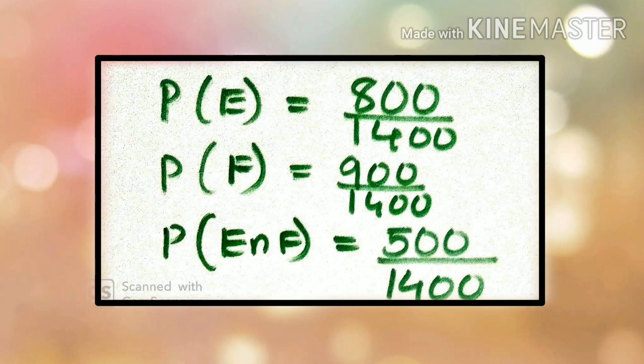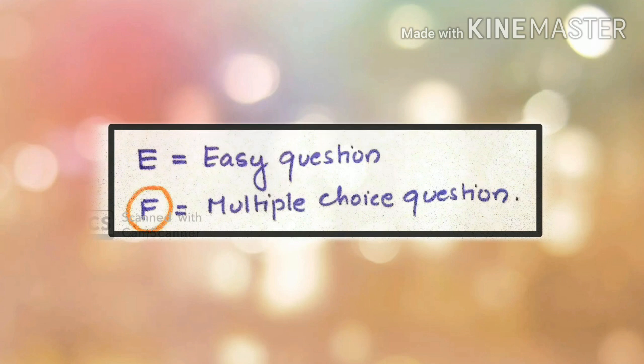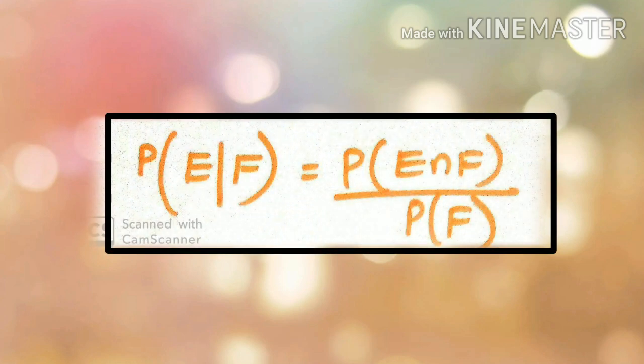P of E, P of E intersection F. P of E by F, P of F by E. Question F — given that, given that — question equation. P of E by F is equal to P of E intersection F by P of F.